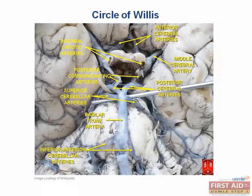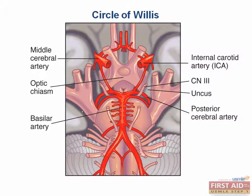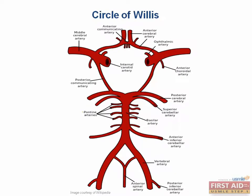Now I want to take a few minutes to discuss the circle of Willis in a little bit more detail. This looks much more complex than it actually is. So let's break it down so you can understand how the anterior and posterior circulations anastomose. Coming up the spinal cord, we have these vertebral arteries, which will give rise to the basilar artery.